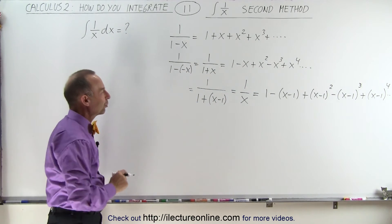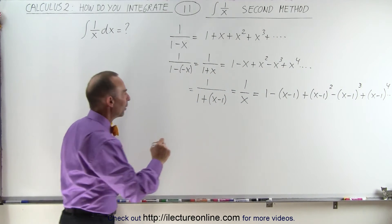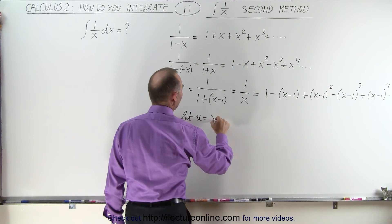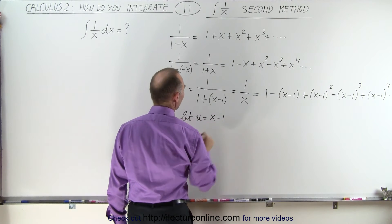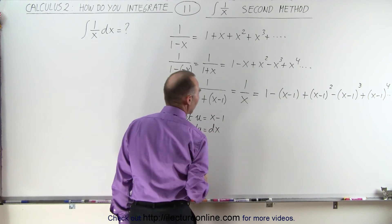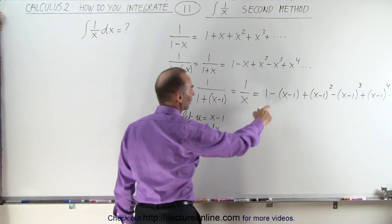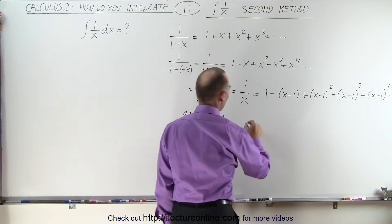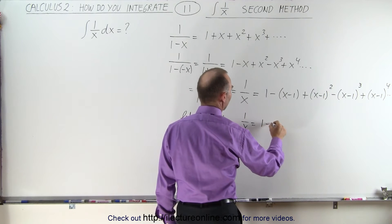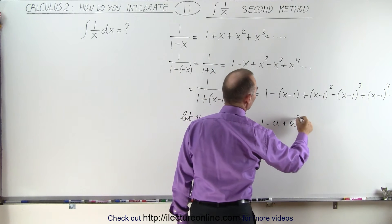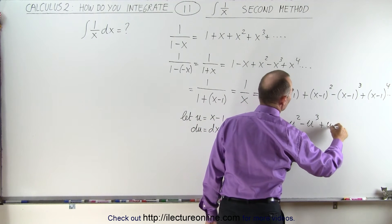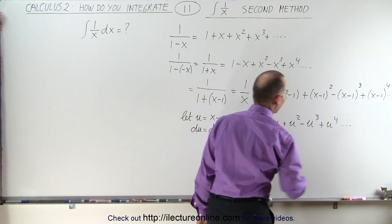Now we're going to make a substitution. We're going to let u equal x minus 1, and then du will be equal to dx. So now we can say that 1 over x can be written as 1 minus u plus u squared minus u cubed plus u to the fourth, and so forth.